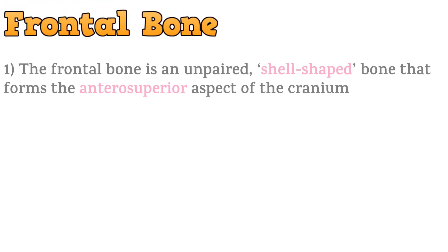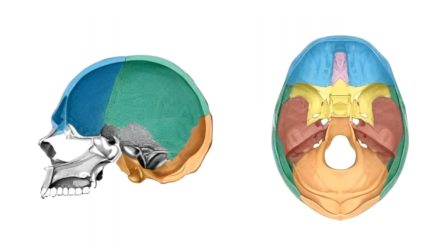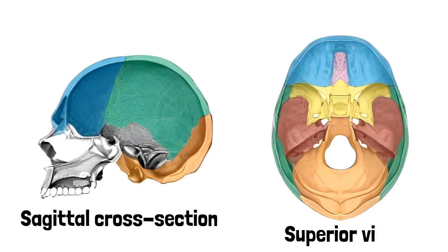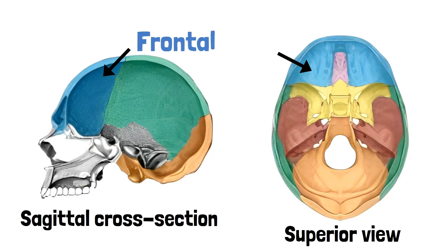The frontal bone is an unpaired, shell-shaped bone that forms the anterosuperior aspect of the cranium. This is the sagittal cross-section and the superior view of the base of skull. And this bone shaded in light blue is the frontal bone — as you can see, it forms the anterosuperior aspect of the cranium.